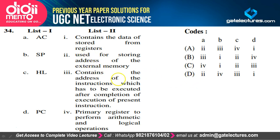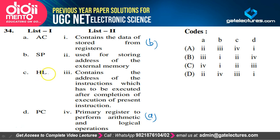Matching 8085 microprocessor registers: Accumulator is the primary register to perform arithmetic and logical operations (A→4). Stack pointer contains the stored data from registers (B→1). HL is a 16-bit register used for storing the address of external memory (C→2). Program counter contains the address of the next instruction to be executed (D→3). Option C is the correct option.